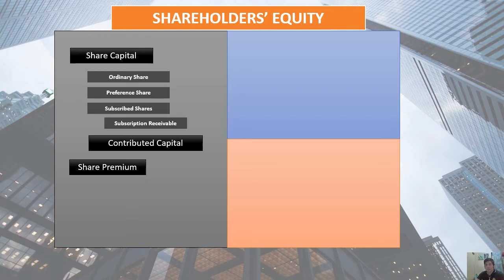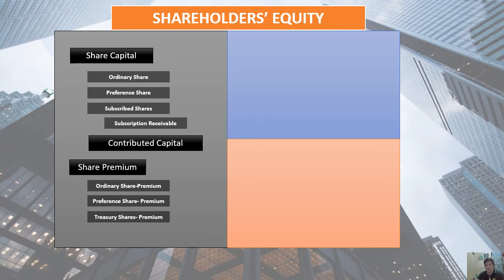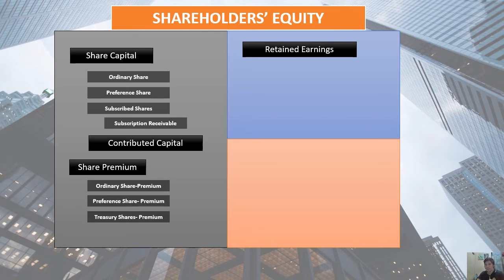The other portion of contributed capital is share premium. Under share premium, we have ordinary share premium — in case the ordinary share is issued at a premium, the premium portion is included in share premium. We also have preference share premium and treasury share premium, in case the treasury share was reacquired. There are many other premiums we will discuss as we encounter them. The second major portion of shareholders' equity is retained earnings — the earnings retained by the corporation since the start of its operations, whether gain or loss.